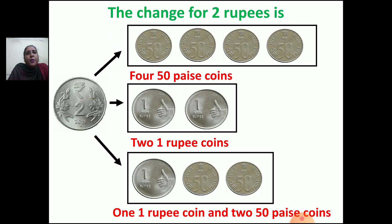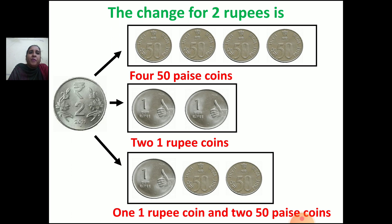Now we will see the change for 2 rupees. If you want change for 2 rupees and you have 50 paise coins, count them: 1, 2, 3, 4. So 4 fifty-paise coins will make 2 rupees. And if you have 1 rupee coins, how many do you need to give change for 2 rupees? Count: 1, 2. So 2 one-rupee coins will make 2 rupees.